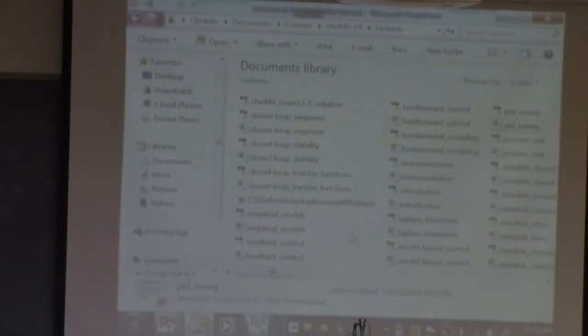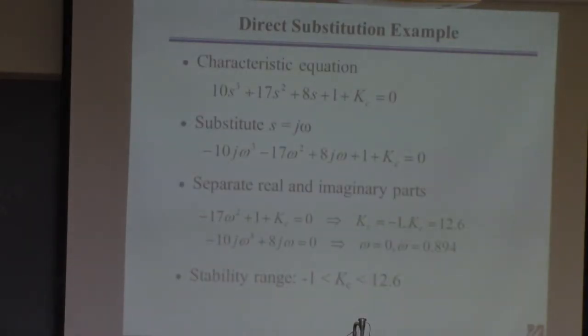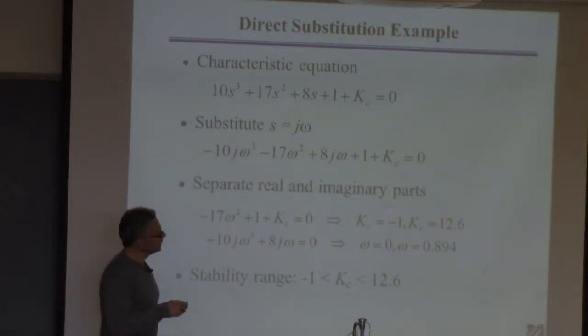I'm talking about this method. So, here was the example. This is the example we focused on, I think it was last time. This is your characteristic equation for the closed loop system. You plugged in s equal j omega, and then you got two equations in two unknowns, because one unknown is the kc, the other unknown is this omega.